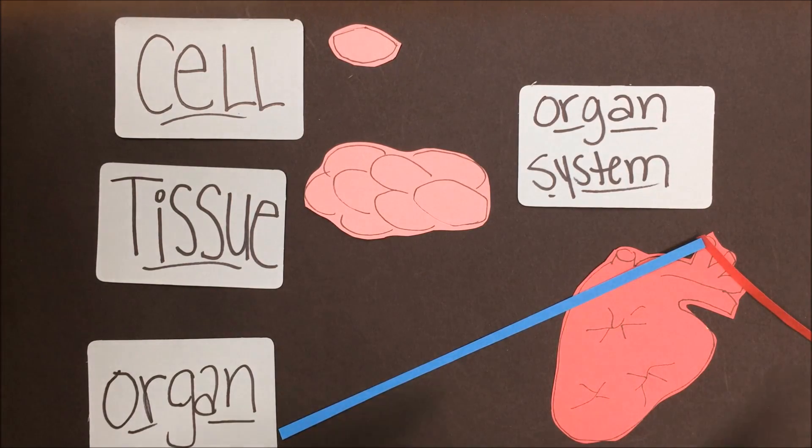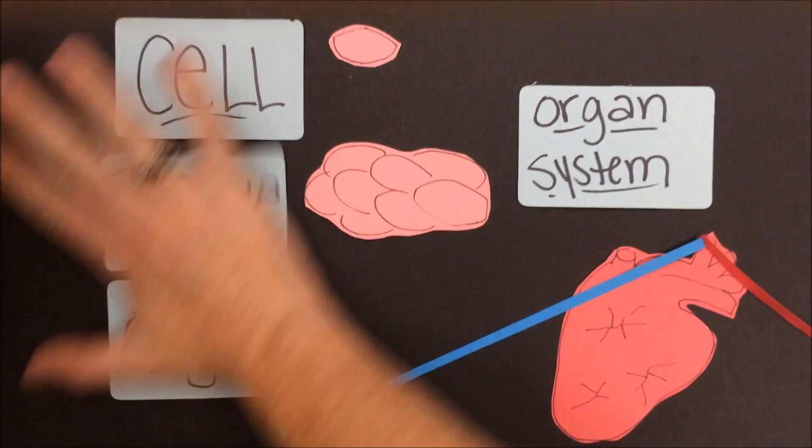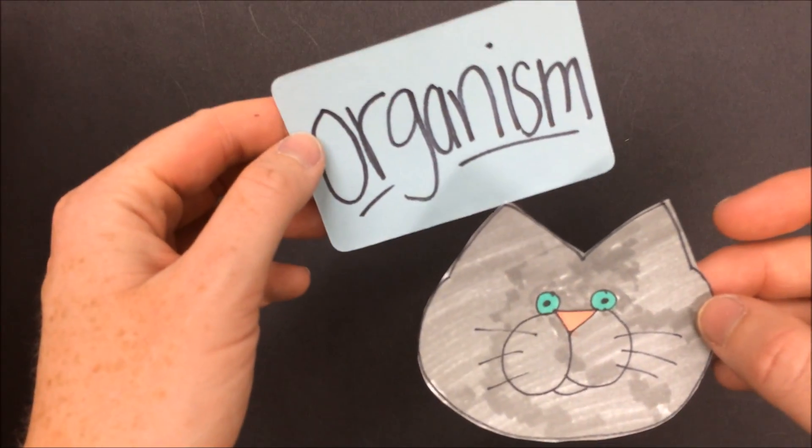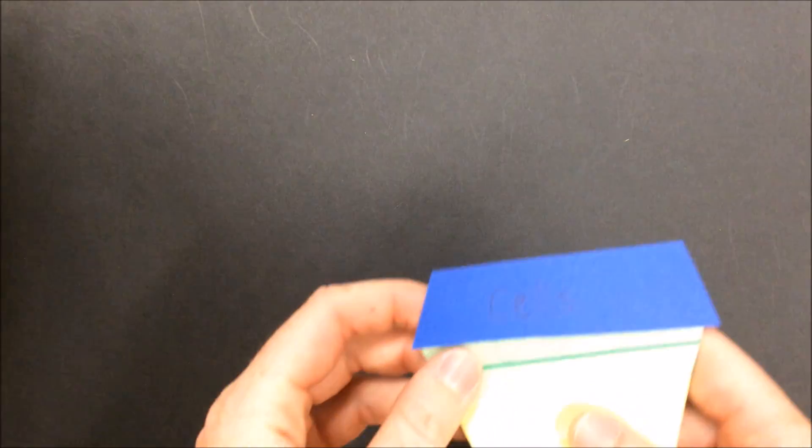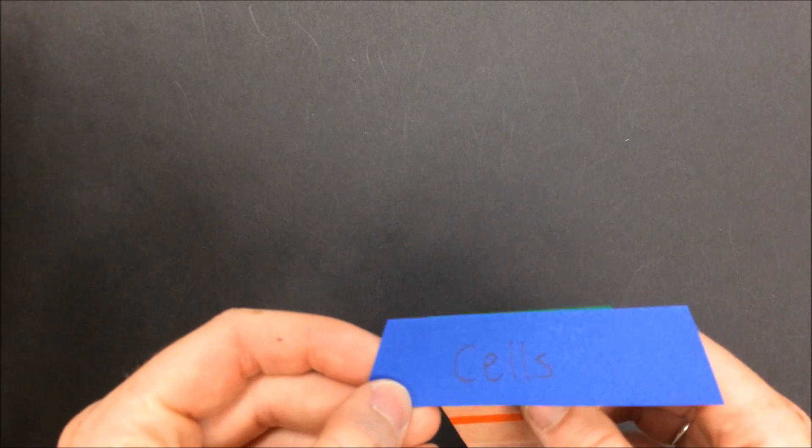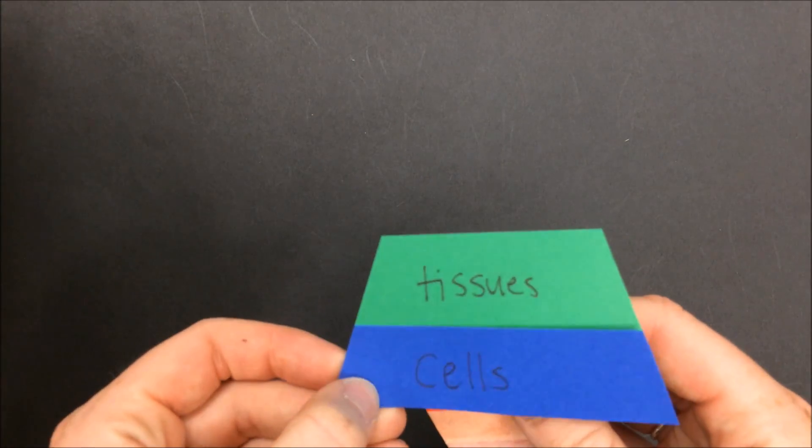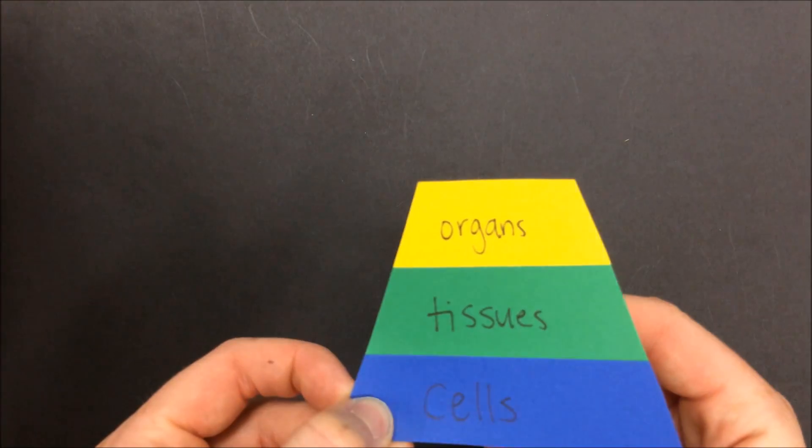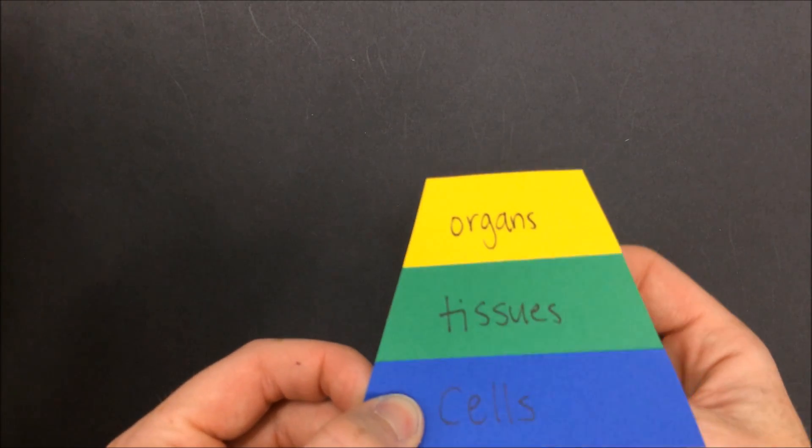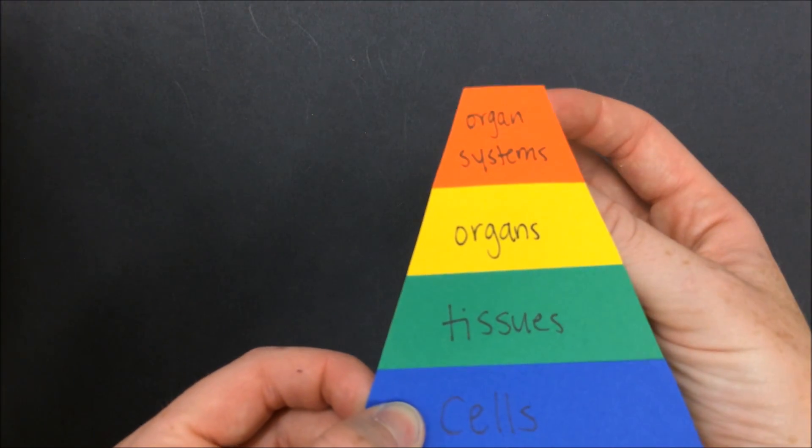Many organs working together on the same task would be considered an organ system. Here I have a heart and pieces of paper representing veins, arteries, capillaries in your cardiovascular system. All of these together would make an organism. Looking at it another way, cells are the most basic building block. Lots of cells together make tissues. Lots of tissues together make organs. Lots of organs together create organ systems, and organ systems together create an organism.